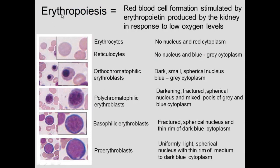If we look at erythropoiesis — red blood cell formation — it is stimulated by erythropoietin, a protein produced in the kidney in response to low oxygen tension. So low oxygen tension will induce erythropoietin, which will cause the bone marrow to produce more red blood cells.